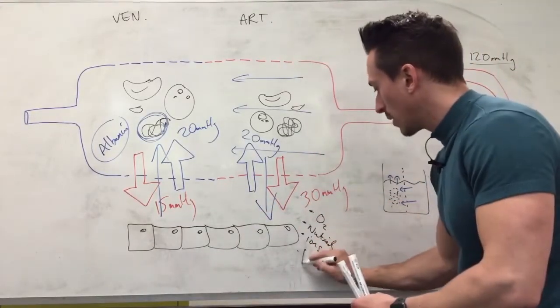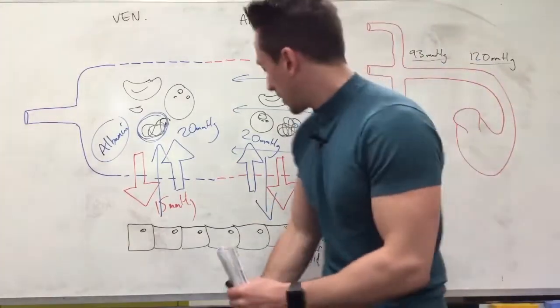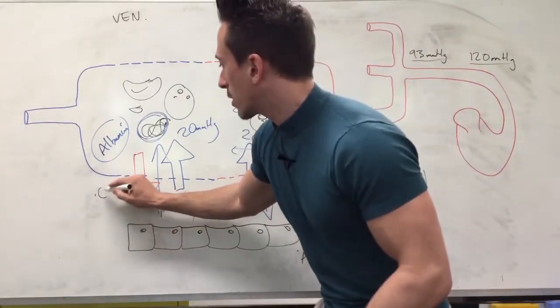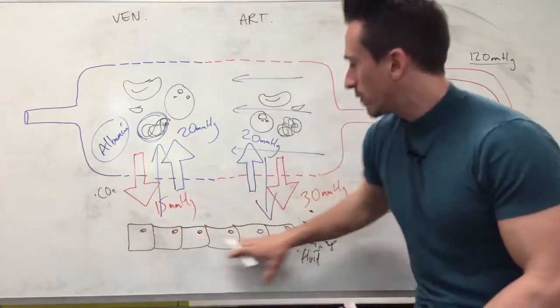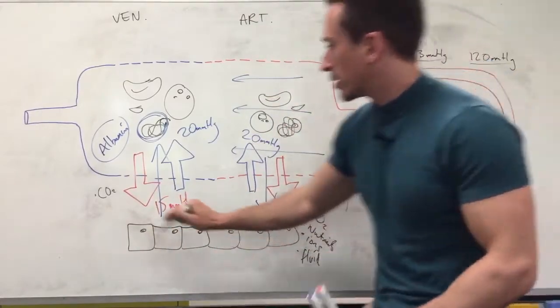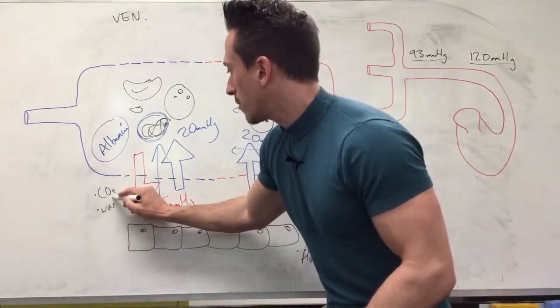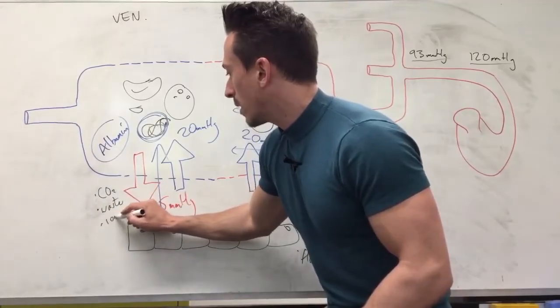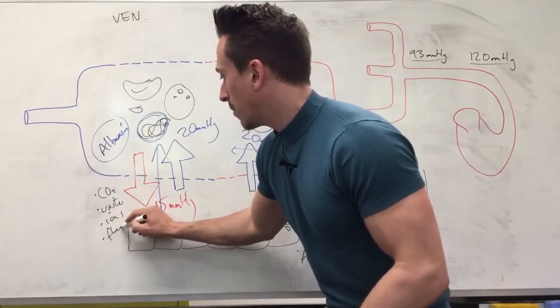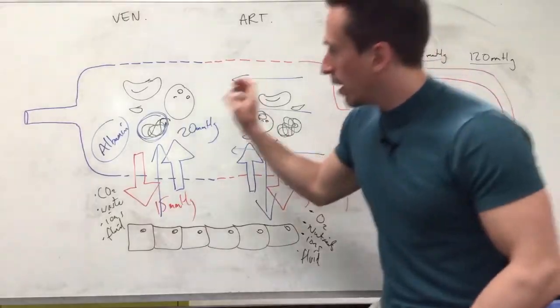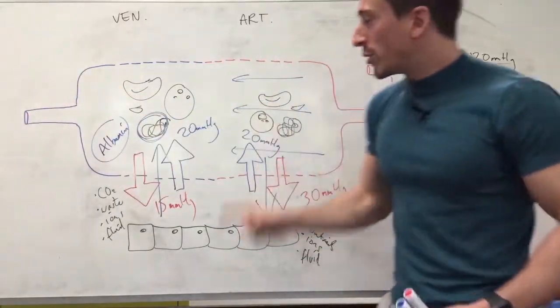But what are we pulling back in on this end? We're pulling back in carbon dioxide because the tissues have used the oxygen, produced carbon dioxide, not nutrients but waste. We're pulling ions back in and we're pulling fluid back in, and then through the venous system back to the heart.